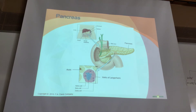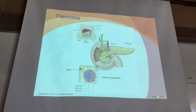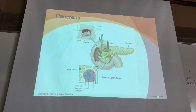The pancreas is an organ that contains both endocrine and exocrine parts. It's nestled right in the curve of the duodenum—the first section of the small intestine—and actually has a portal into the small intestines. The exocrine glands, called acini glands, secrete digestive enzymes through ducts into the small intestines to help break down carbohydrates, fats, and proteins for absorption through the intestinal walls.